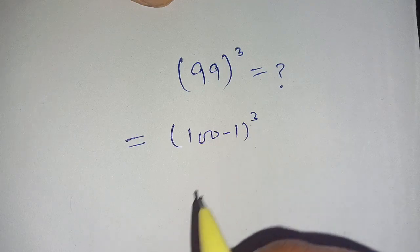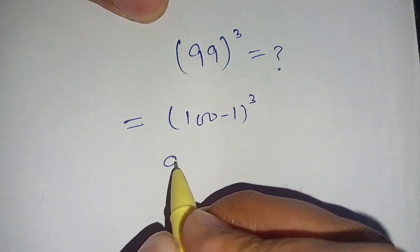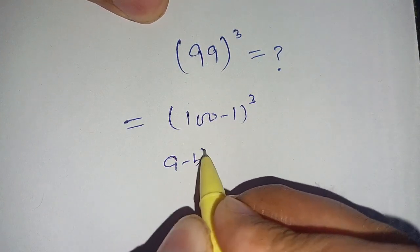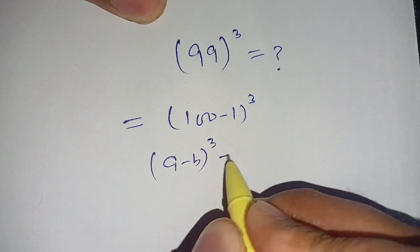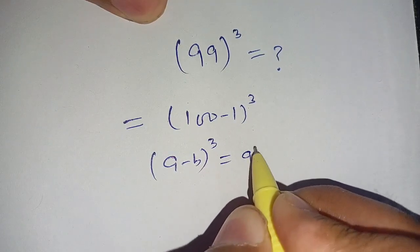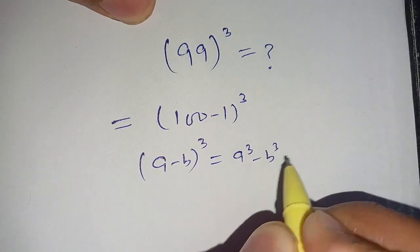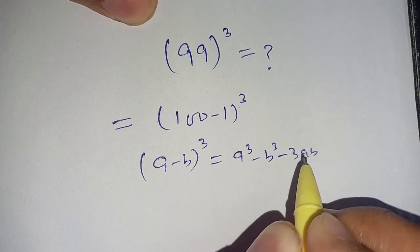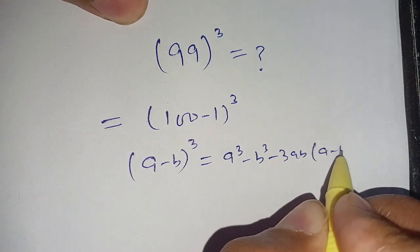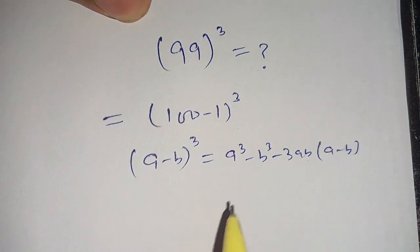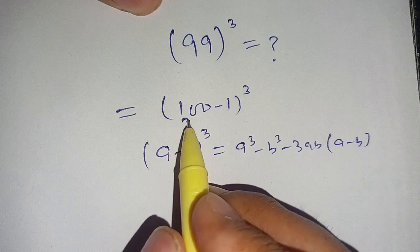Before solving this, we know the identity: (a minus b) whole cube is equal to a cube minus b cube minus 3 times a times b times (a minus b).